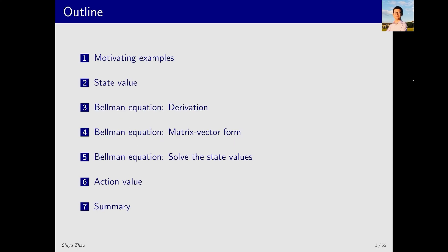This is the outline of this lecture. First, we will use several examples to explain why it is important to study the state value and the Bellman equation. Second, we will formally define state value. Sections 3, 4 and 5 will all be dedicated to explaining the Bellman equation. In the first part we will derive the Bellman equation. In the second part we will present its matrix vector form, a very useful expression. In the third part we will explain how to solve the state value using the Bellman equation. We will turn from state value to action value eventually and then give a summary.